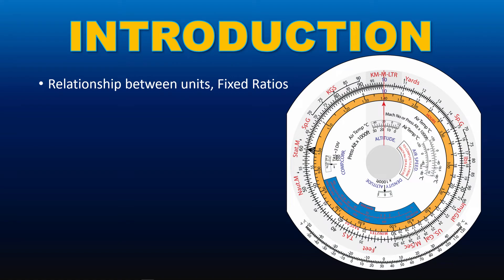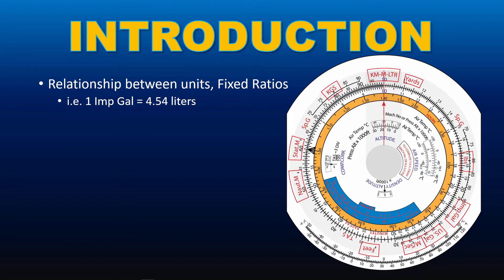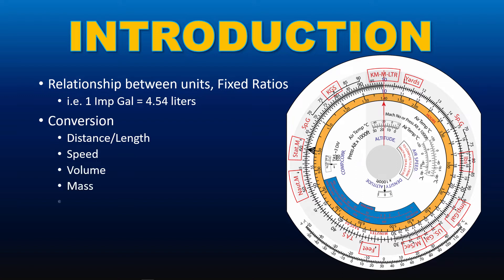The relationship between units are usually fixed ratios. For example, one imperial gallon is equal to 4.54 liters, and thus it can be solved using a circular slide rule. Marked with red arcs are the conversion markings on the computer face of the CRP5. Units conversion that can be done using CRP5 are: distance or length, speed, volume, mass, temperature, and conversion between volume and mass. Conversion between volume and mass will be explained in the next video.